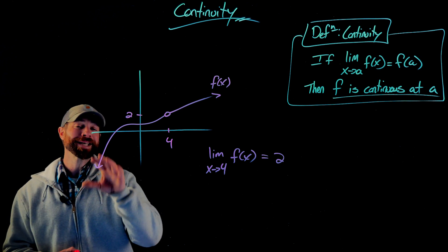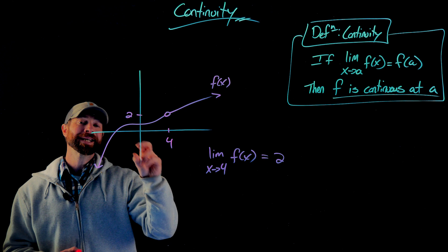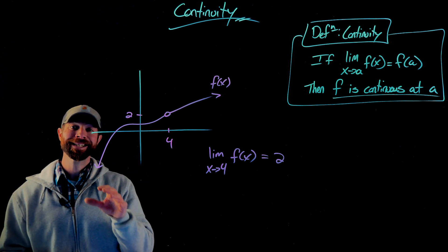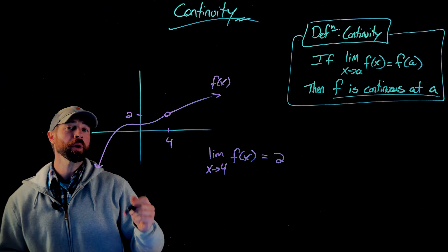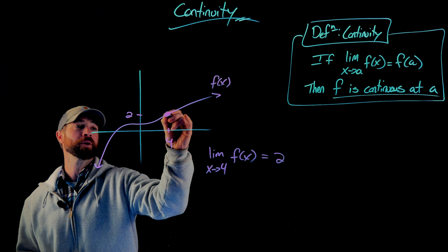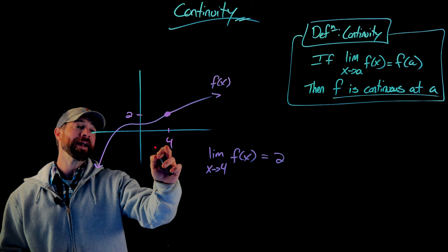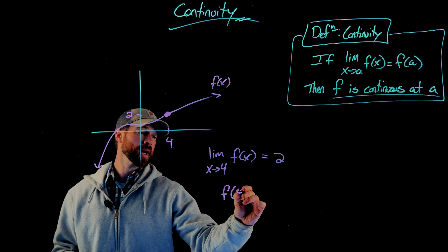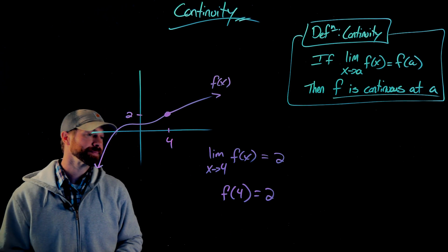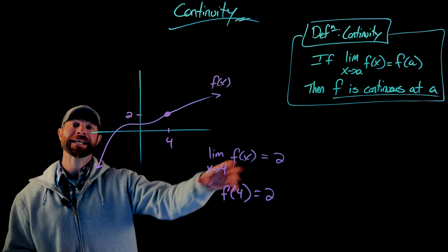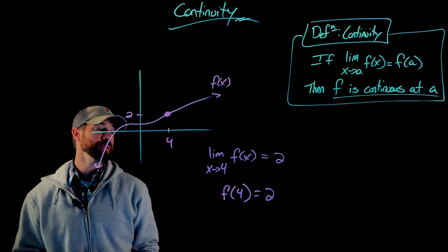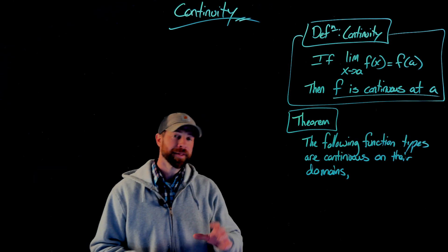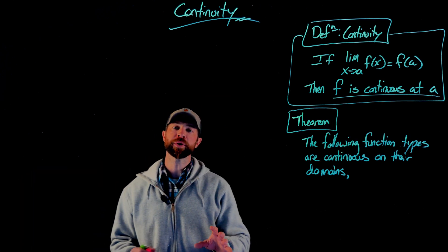Though this function would not be continuous at x equals four, because we don't have a defined function value. If we want this function to be continuous, what we would need is not a hole, but a point there at x equals four giving an output value of two — in other words, we want f of four to equal two. Now that our function's limit at four is two and the function value is two, we say this function is continuous at x equals four.